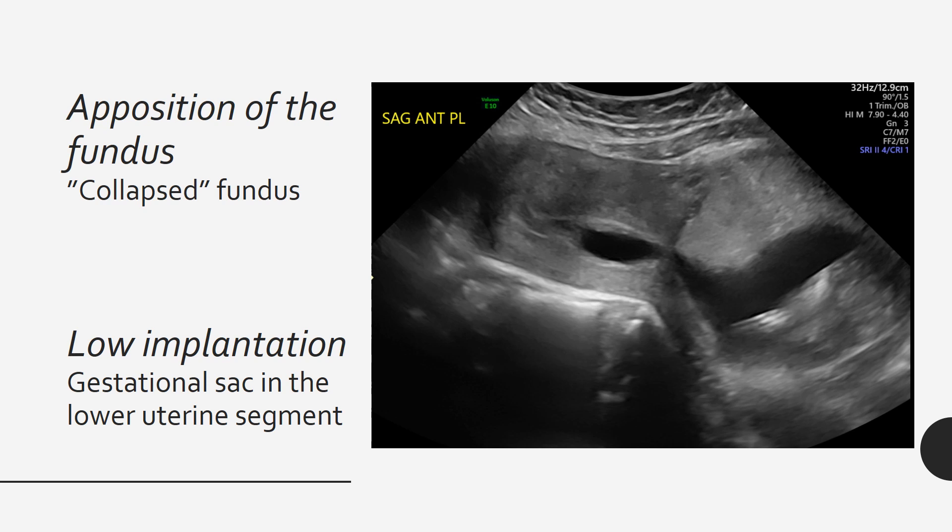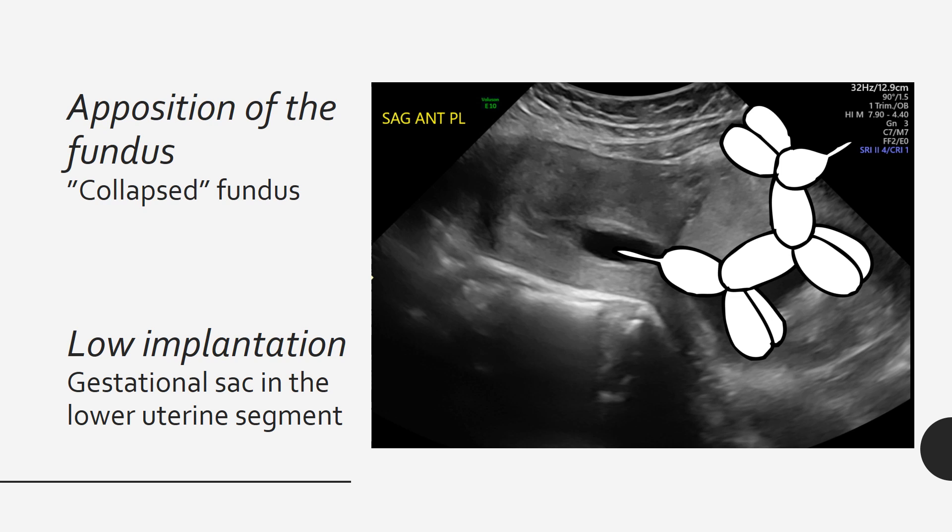The first step in obstetrical imaging should always start with an overview of maternal structures. We start with a sagittal sweep of the uterus and aim to include the fundus and lower uterine segment in the frame. The first markers are apposition of the fundus and low implantation. The fundus appears collapsed, where the anterior and posterior myometrium are adjacent to each other, and the gestational sac is implanted in the lower uterine segment. This reminds me of the tail of a balloon animal — the distal end is small and collapsed, and the lower uterine segment appears inflated.